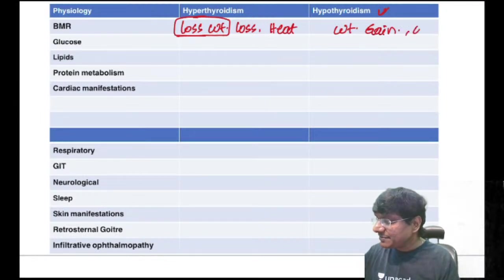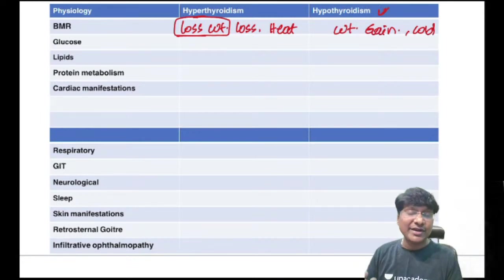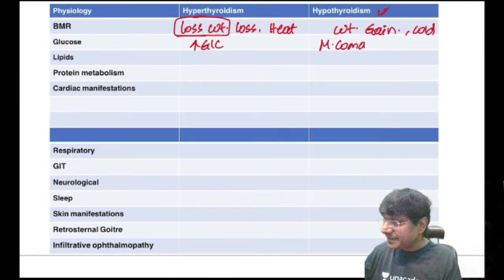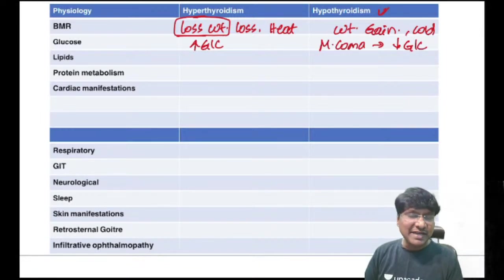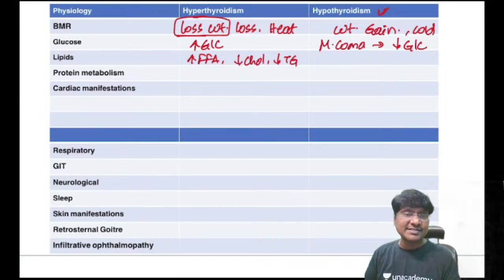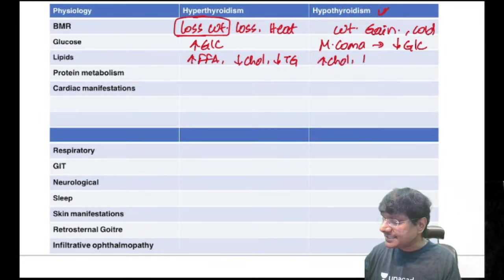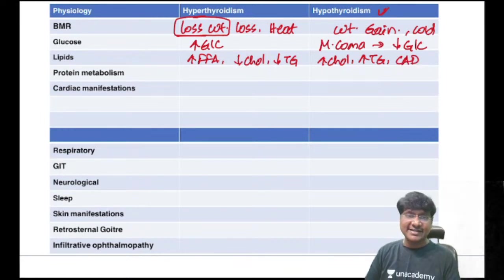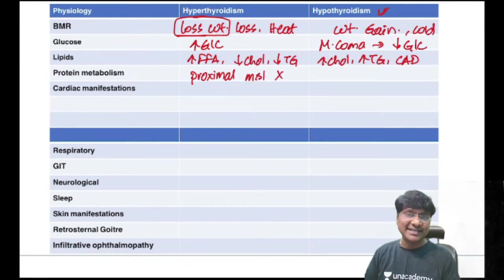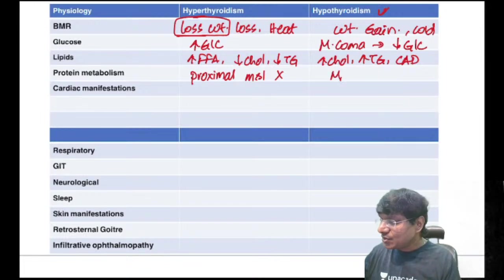Lipid metabolism: thyroid hormone causes excessive lipolysis — in hyperthyroidism there are increased free fatty acids, decreased cholesterol, decreased triglycerides. In hypothyroidism, no lipolysis — increased cholesterol and triglycerides leading to coronary artery disease. Protein metabolism is very high in hyperthyroidism, causing proximal muscle myopathy; in hypothyroidism, only muscle fatigue occurs.